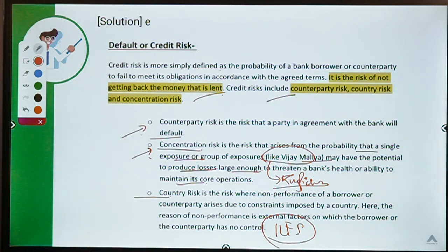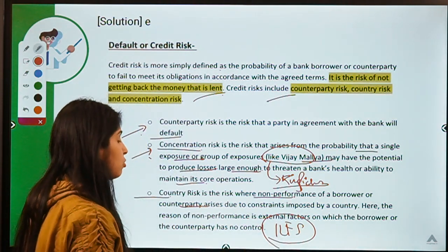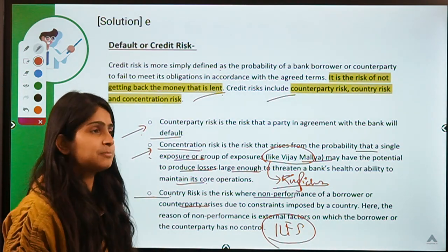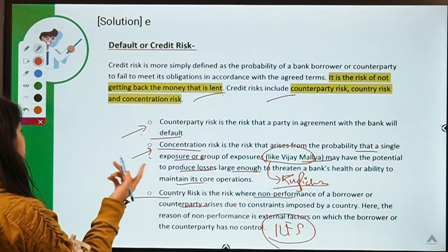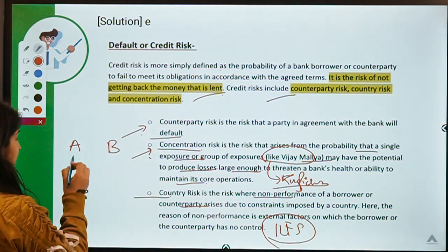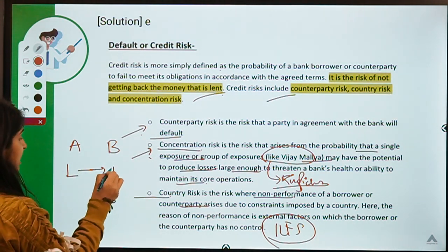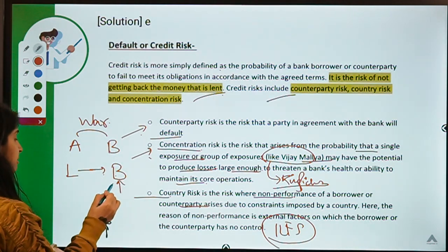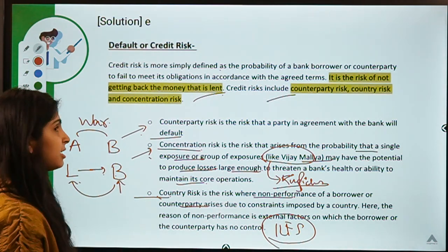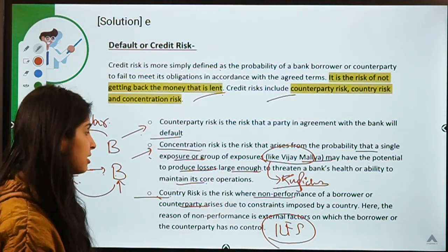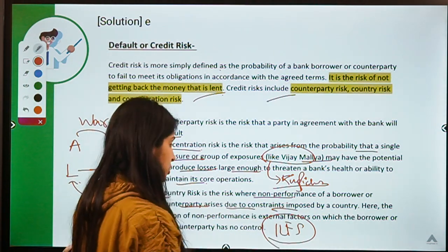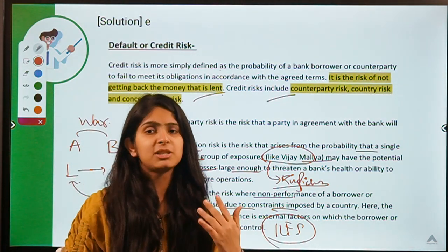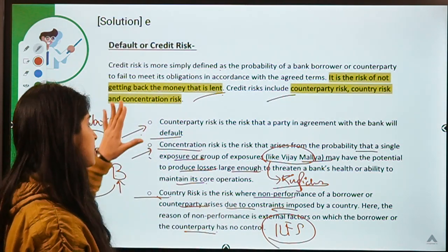Country risk refers to the non-performance of a borrower or counterparty that arises due to constraints imposed by a country. For example, if a lender in Country A lends to a borrower in Country B but a war breaks out between those countries, the borrower from Country B may be unable to pay back. This inability to pay because of belonging to another country — due to external factors outside the borrower's or lender's control — is known as country risk.